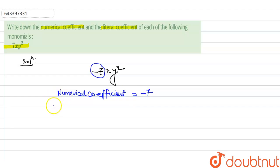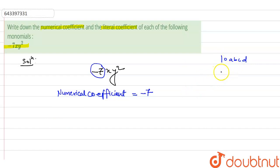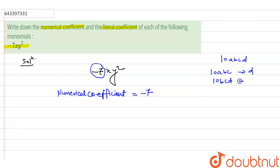But when we talk about literal coefficient, it is something different from numerical coefficient. Like if I talk about 10abcd, then for 10abcd, 'd' will be the literal coefficient of 10abc. For 10bcd, 'a' will be the literal coefficient.